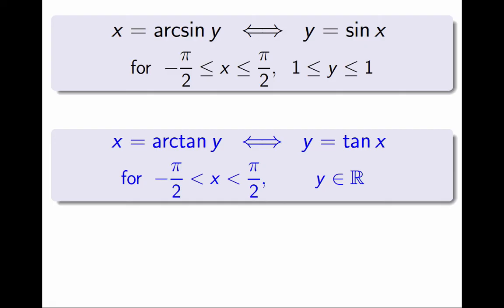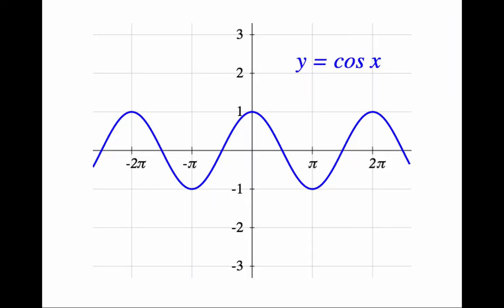We have one more function to go. Let's look at cosine. Here is the graph. Like the other trig functions, cosine is not 1 to 1, but we can restrict the domain to make it 1 to 1.